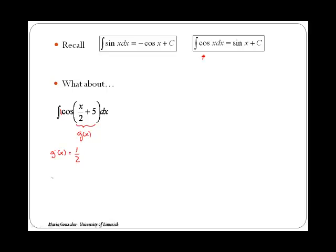Therefore we can apply substitution in this case and we will call u to x over 2 plus 5. Therefore du dx would be a half. If we cross multiply we get that dx is equal to 2 times du.